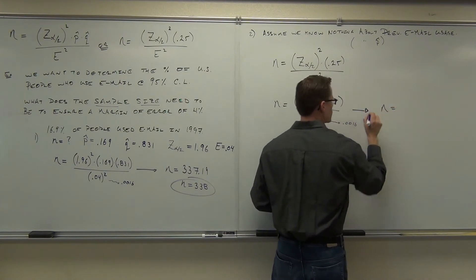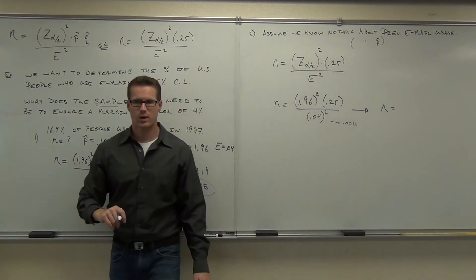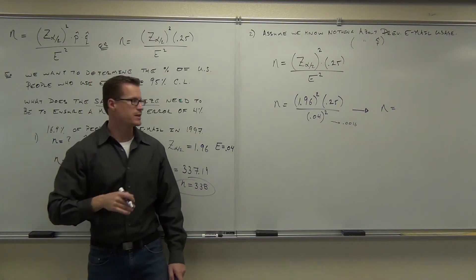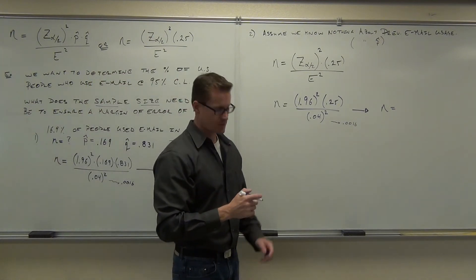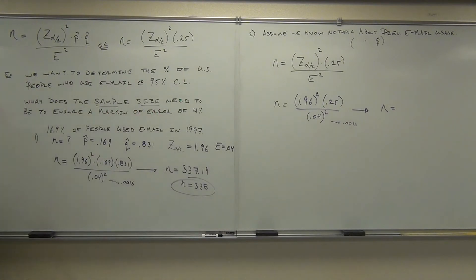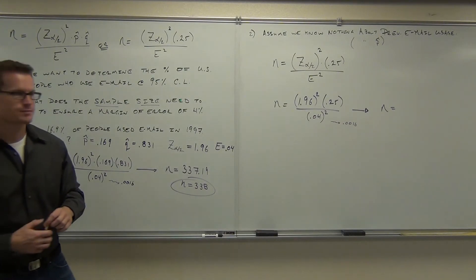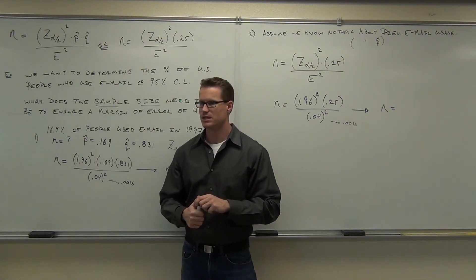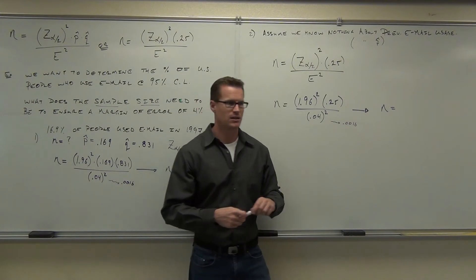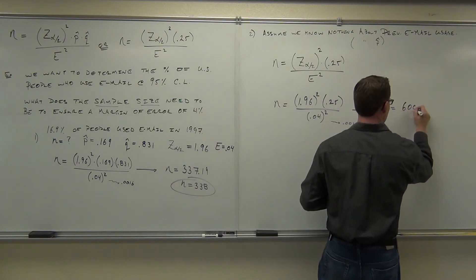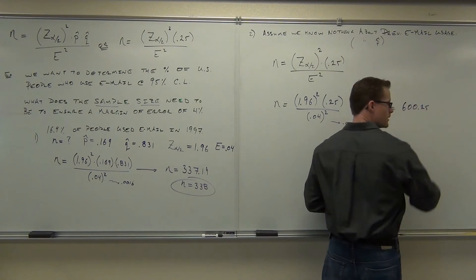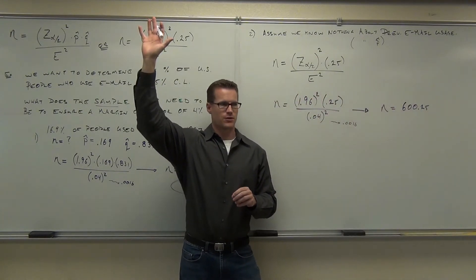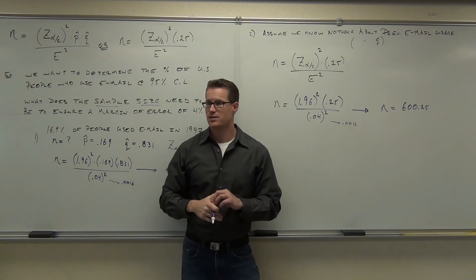Let's find out. This is still 0.0016. So what you're going to do on your calculators right now: take 1.96 squared, multiply by 0.25, press enter, then divide by 0.0016. Did you find something? What'd you get?